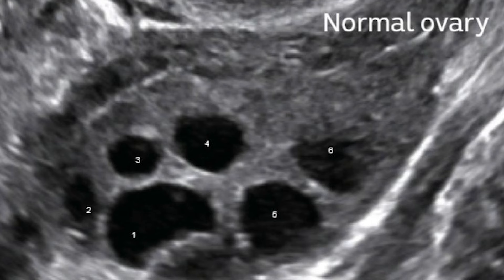It is important to note that some cysts are abnormal, and those ones we should worry about. At the beginning of your menstrual cycle, your ovaries produce a lot of tiny sacs called follicles that contain fluid. Technically, those sacs of fluid are cysts. Your follicles are cysts, and it's your follicles that contain the egg. So these cysts have eggs inside them.